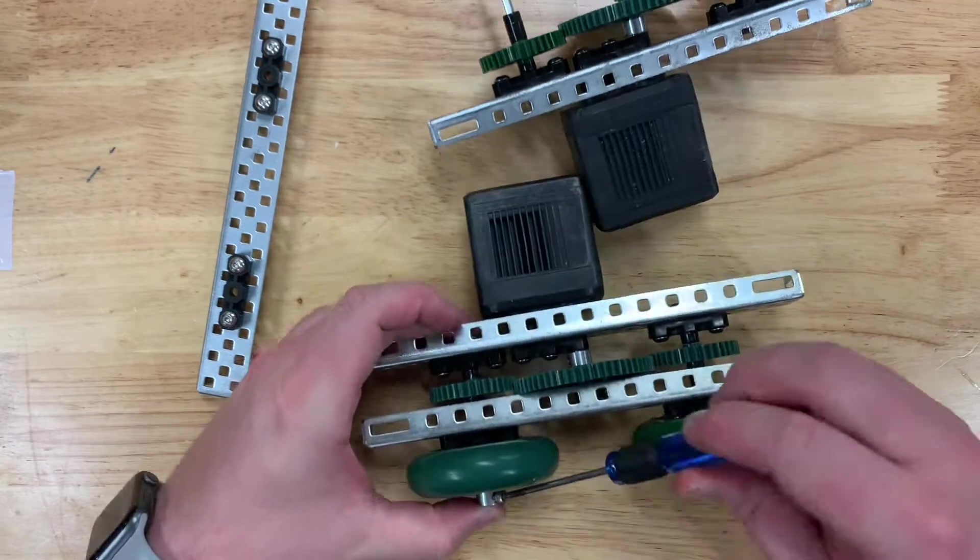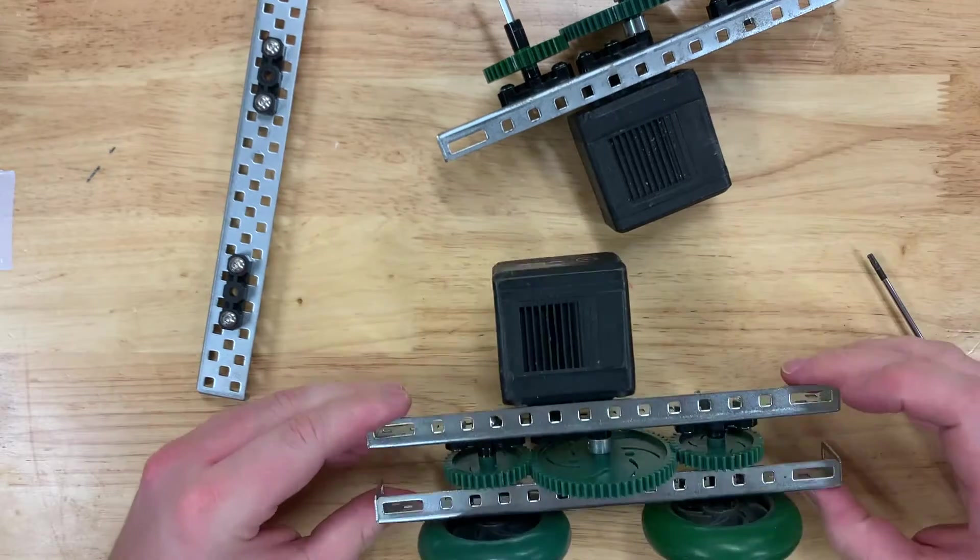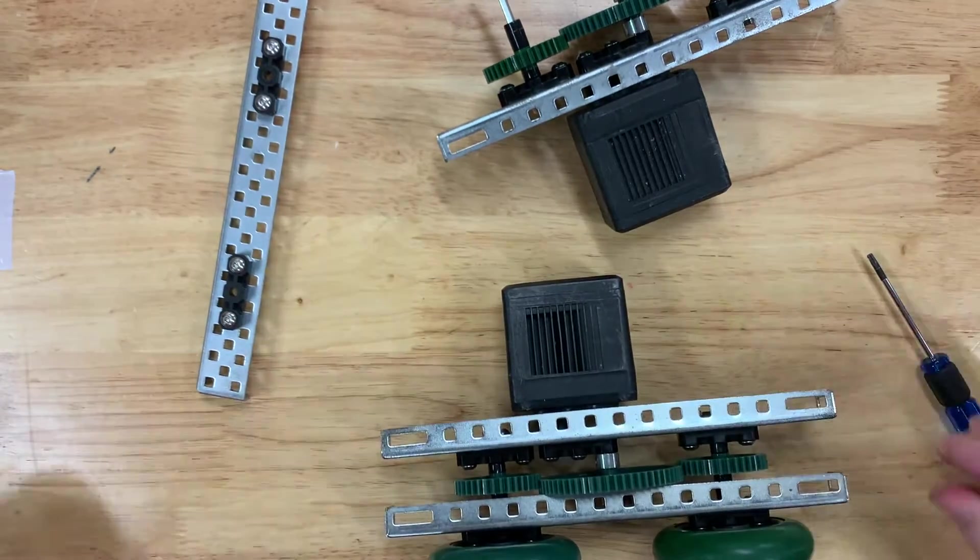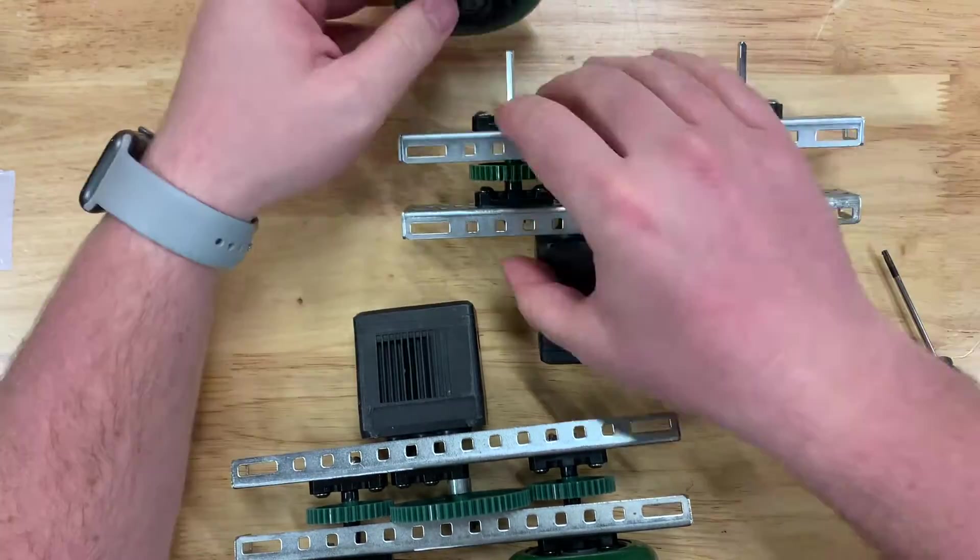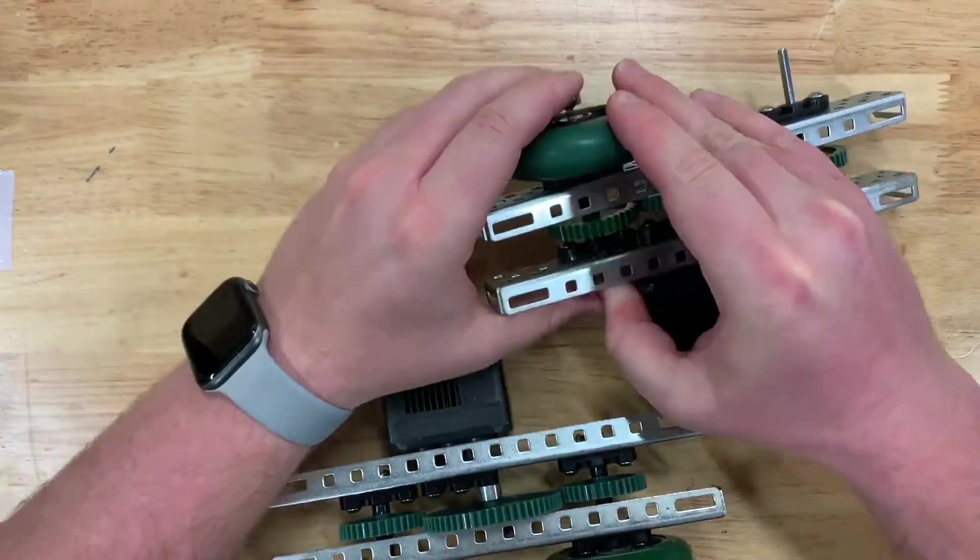Okay, and then we just need to repeat that for the opposite side. So slide it on, put the wheels on, and put your shaft collars on.